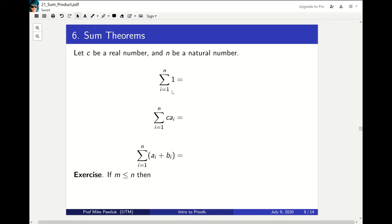So what happens when we're adding up one n times? Well, the one here doesn't depend on the index, so this is one plus one plus one plus one n times.